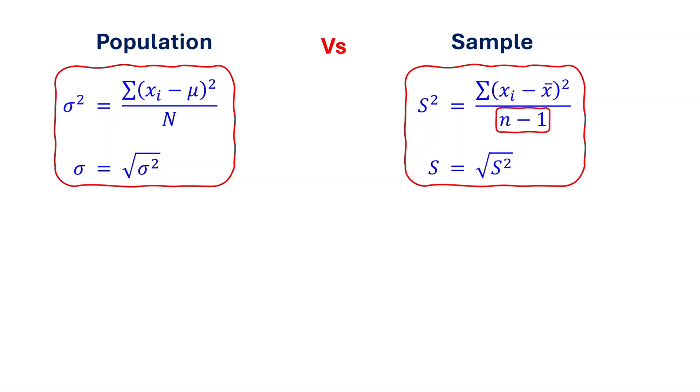We will also discuss why we divide by the sample size minus 1 when working with sample data. As a quick recap, a population includes the entire group you are studying, while a sample is a smaller group taken from that population.